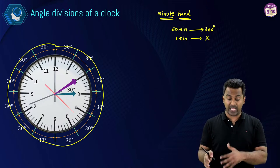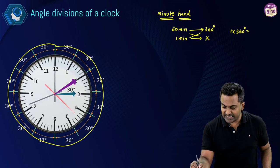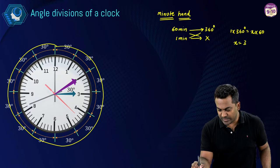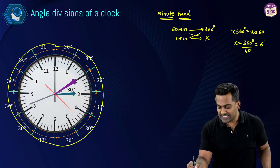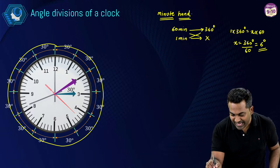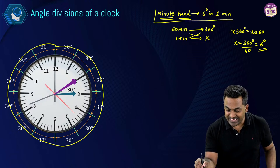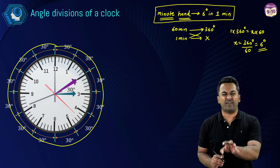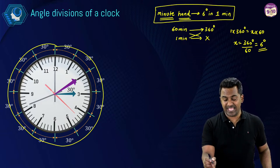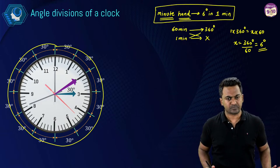Using direct proportion and cross-multiplication: 1 × 360 = x × 60, so divide both sides by 60 and x = 360 ÷ 60 = 6 degrees. Keep this in mind — the minute hand covers 6 degrees in one minute. Please write this down because this is something we'll be using throughout all the clock problems.